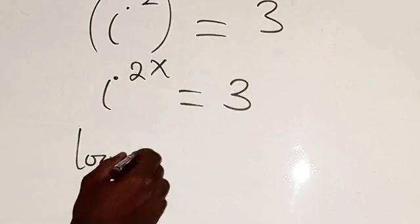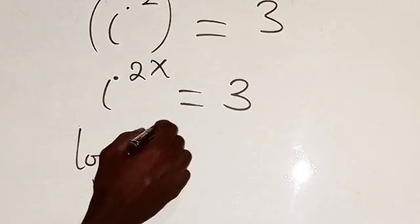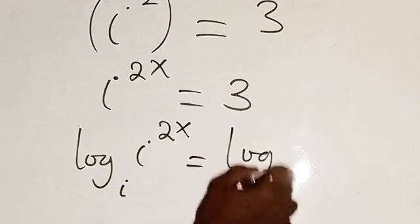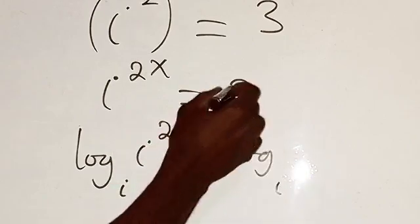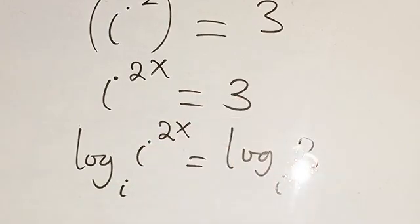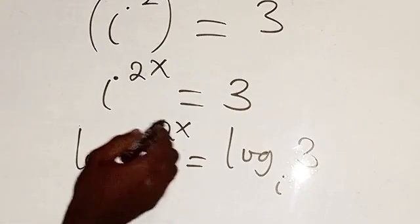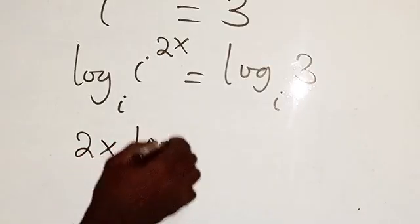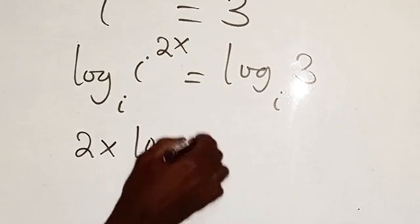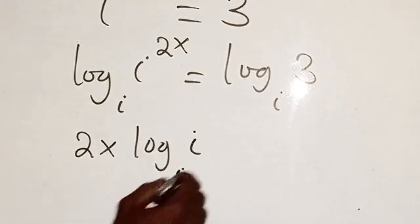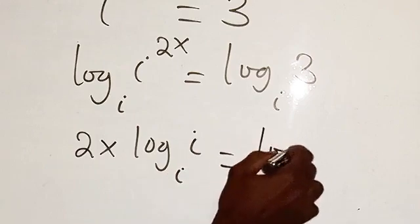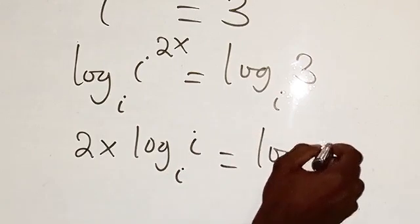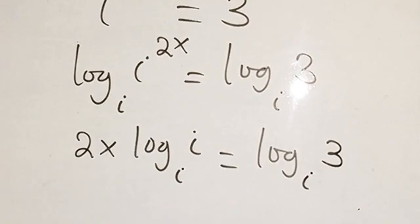That is this. We have i^(2x) = 3, so log_i(i^(2x)) = log_i(3). So now the next thing we're going to do, this power will come down. We have 2x log_i(i) equals log_i(3).